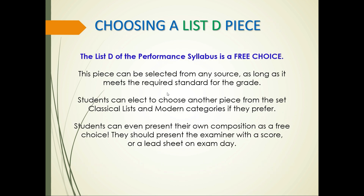The list D of the performance syllabus is a free choice list. This piece can be selected from any source as long as it meets the required standard for the grade. Students can elect to choose another piece from the set classical lists and modern categories if they prefer. Students can even present their own composition as a free choice — they should present the examiner with a score or a lead sheet on exam day.